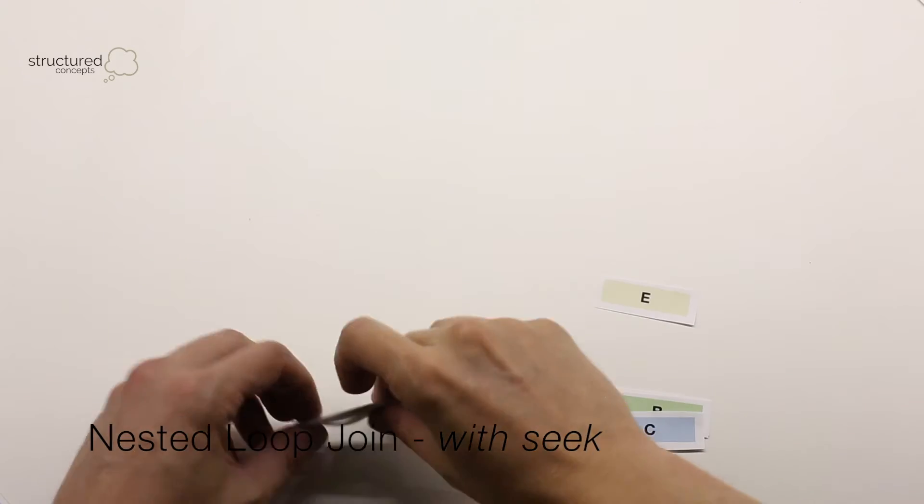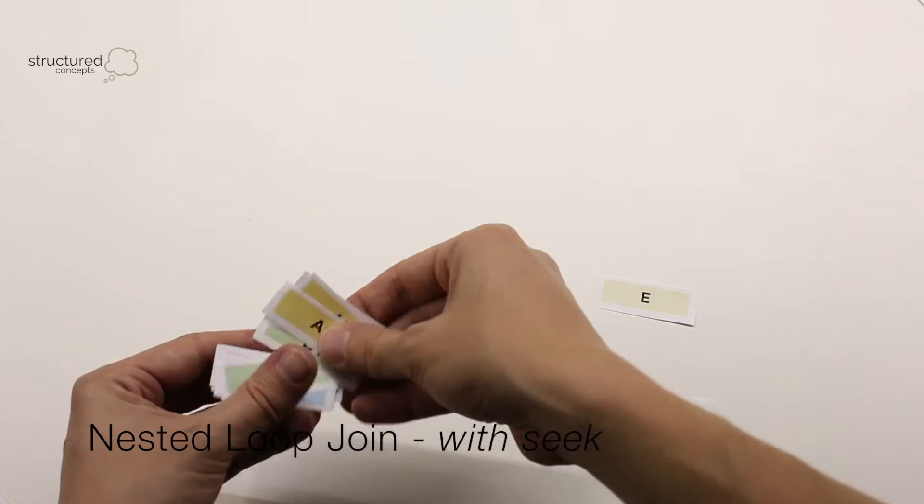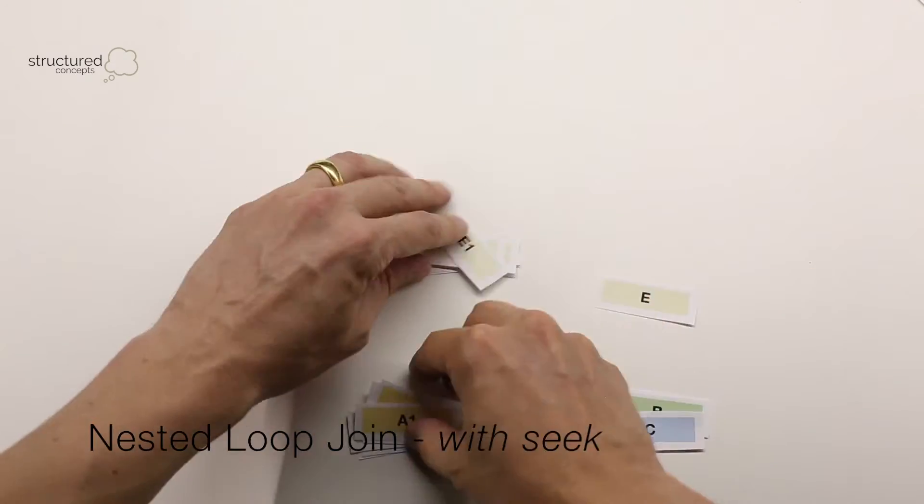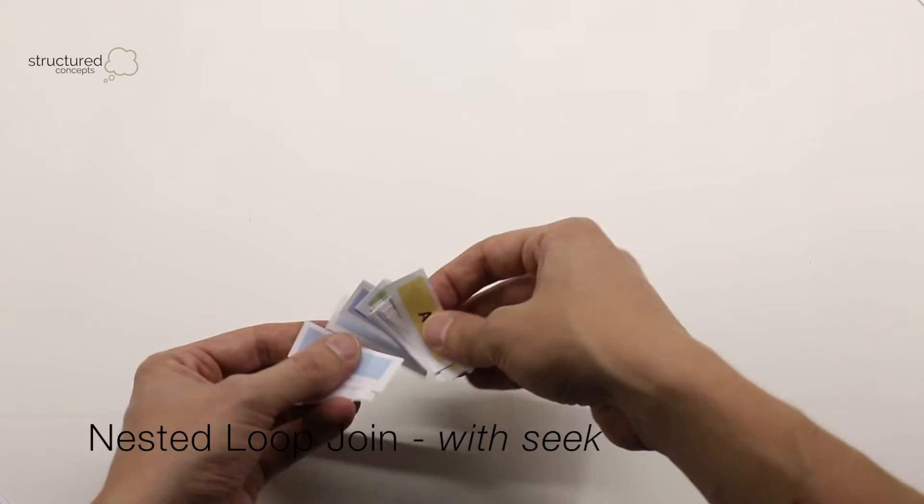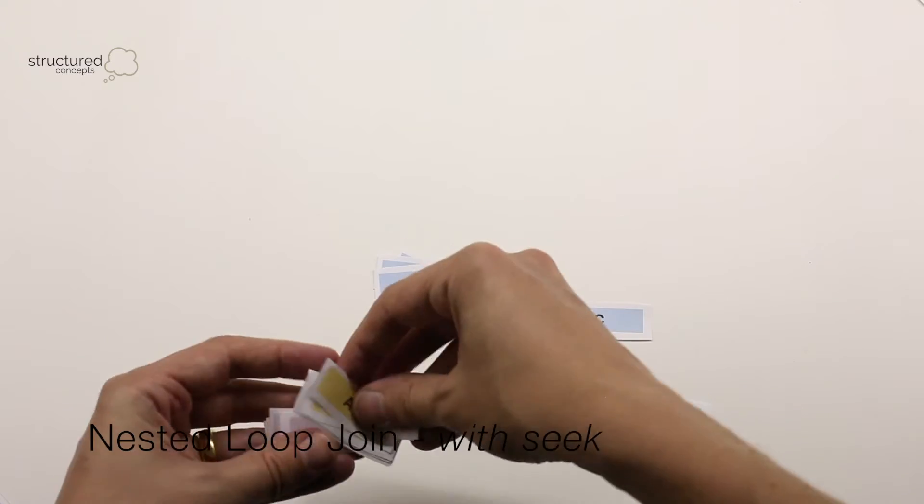Look what happens when the probe input is already sorted. We can jump straight to the first match and just fetch a range of matching rows. This is known as a seek, or technically a range scan, and it's much more efficient.